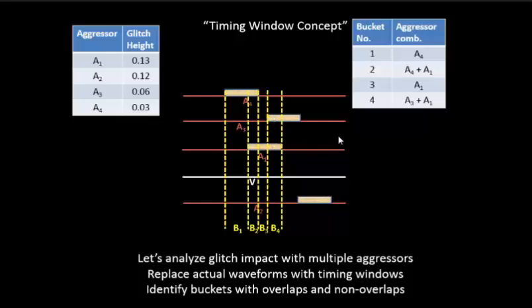On a piece of silicon, it's always possible that the arrival time on A1 will lie somewhere over here, and the arrival time of A3 will lie somewhere over here. So in that case, the impact of this particular switching aggressors will be an addition of A1 plus A3. The glitch height will be an addition of A1 plus A3.